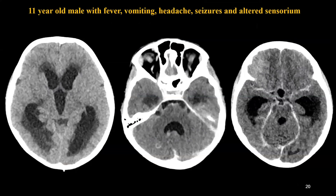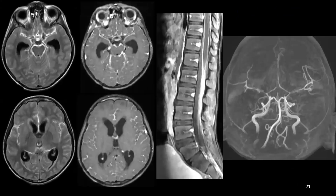This is a classical image — the patient has extra-ventricular obstructive hydrocephalus which is decompensated, as you can see trans-ependymal CSF seepage. If you look carefully at the posterior foci, you also find an enhancing granuloma, and there is basal predominant meningitis. So the possibility of basal predominant meningitis, likely TB given our endemicity, is raised.